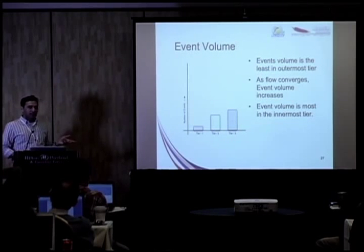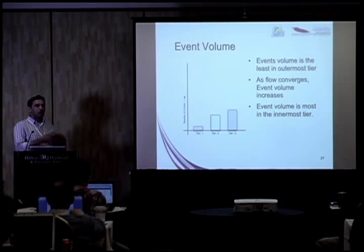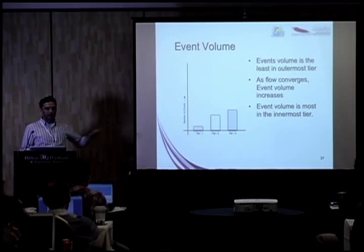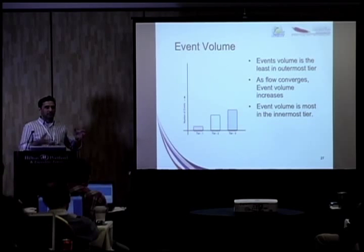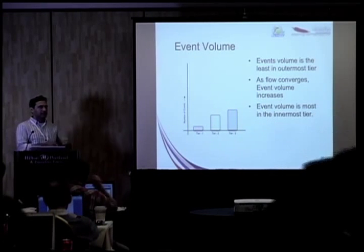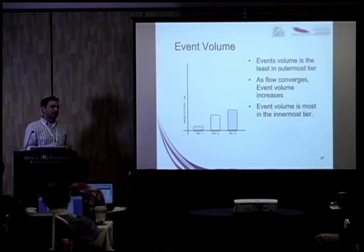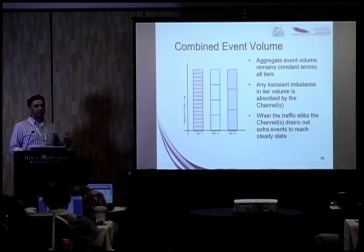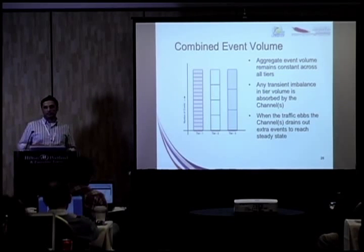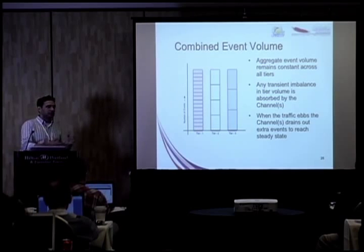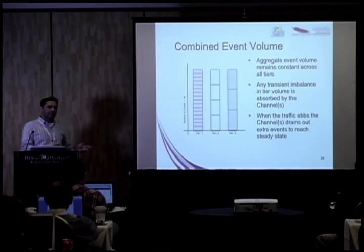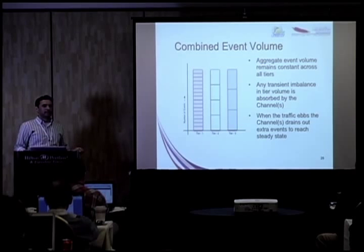The event volume in these tiers is different. Your outermost tier agents — running closest to where data is being produced — will see the minimal data volume per agent. As data goes into the aggregation tiers, the amount of data each aggregation agent deals with goes up. If you do the math, they all add up: all the data produced at the outermost tier is exactly constant across all the tiers — it's just a matter of how many agents it's divided into. That's the fundamental premise on how you would plan and size your deployments — you want to strive for the steady state.